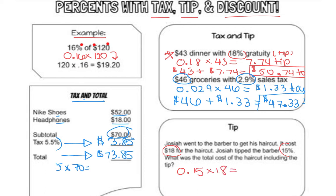That equals 2.7, but because this is money we add the zero to place it in the hundredths, so $2.70 tip. Now we add the tip to the price of the haircut: $18 haircut plus $2.70 tip equals $20.70 total.